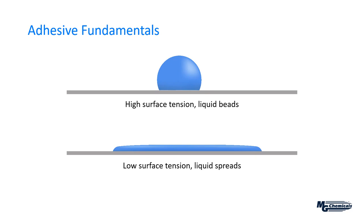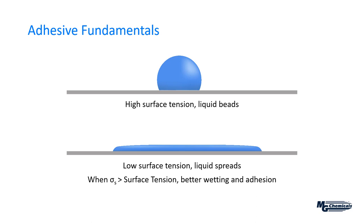Now let's look at the adhesive itself by evaluating surface tension. A liquid with high surface tension beads up, as this is the most stable structure, whereas low surface tension liquids can wet over a surface. When you have relatively high surface energy that is much larger than the surface tension, the adhesive will wet out and you get better adhesion. When surface energy is relatively low compared to surface tension, you see poor wetting and relatively poor adhesion. Both factors must be considered to achieve the best adhesion.